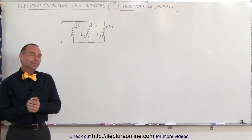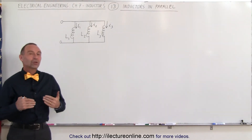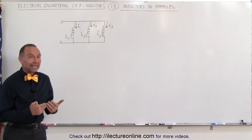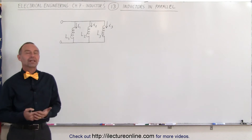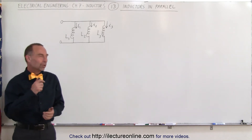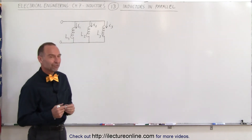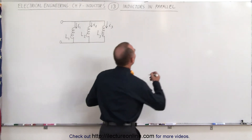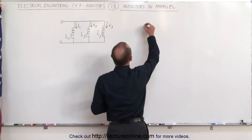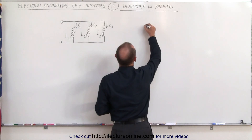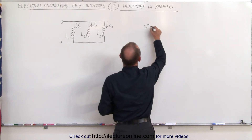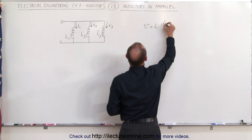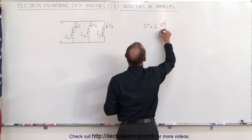Welcome to ElectronLine. How do we find the total inductance of inductors placed in parallel? Well, we can use this technique to figure that out. First of all, we know that the voltage across any inductor is equal to the inductance times di/dt.